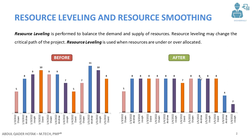As you can see, Andrew had to work nine hours on one day and eleven hours on another, which results in four extra hours of work. In order to level this resource, what we have done is moved those four hours of work for Andrew to 6th January.